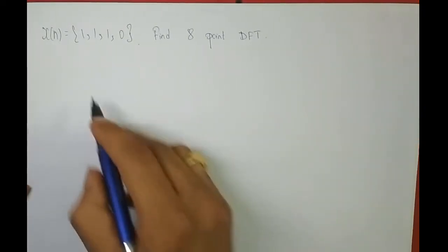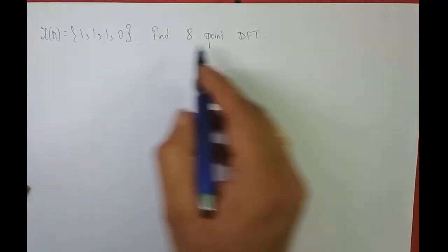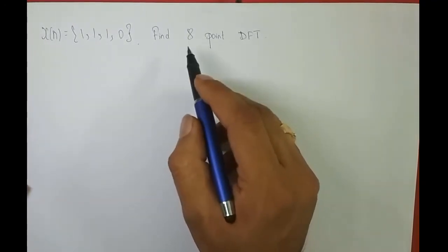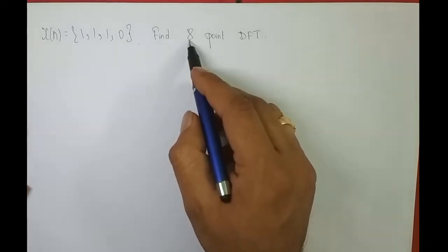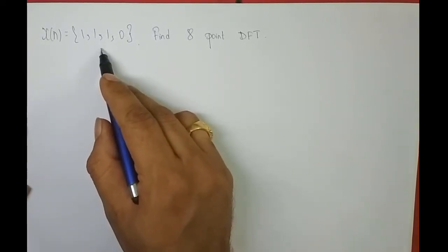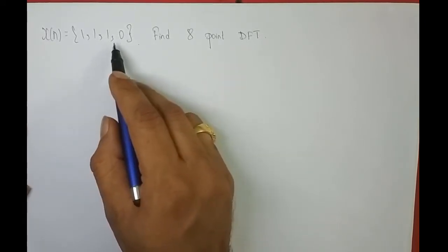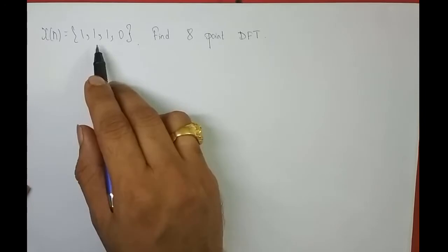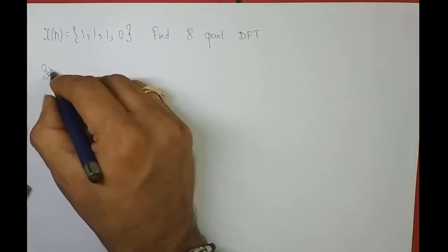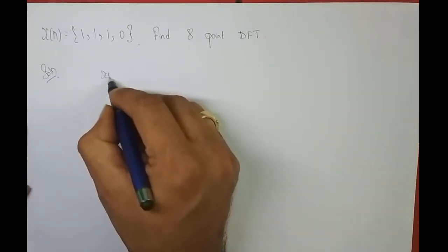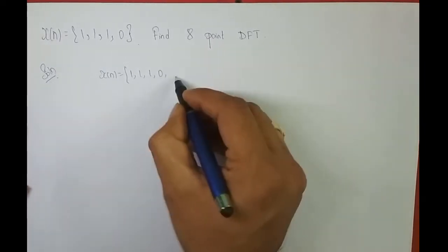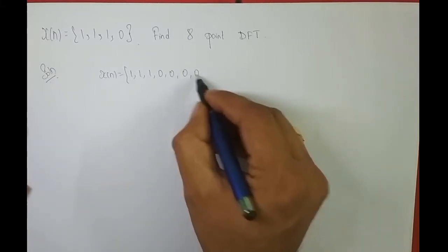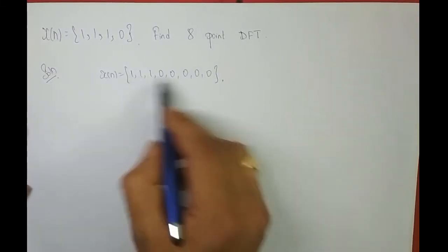You might ask: you have given a sequence of only length 4 and you are asking us to find 8-point DFT. If such problems are asked, what you need to do is make the length of x of n equal to 8 by padding the appropriate number of zeros. In this case I need to pad 4 zeros so that the length of x of n becomes 8.